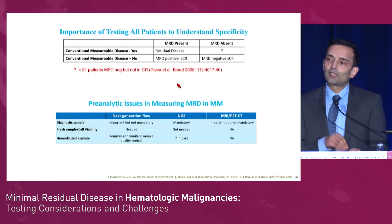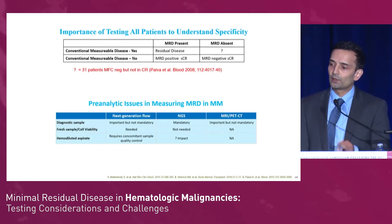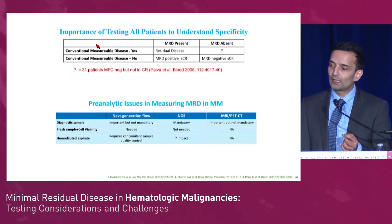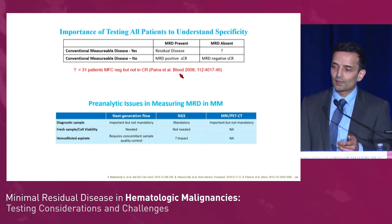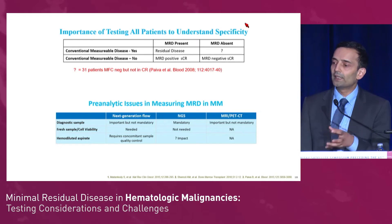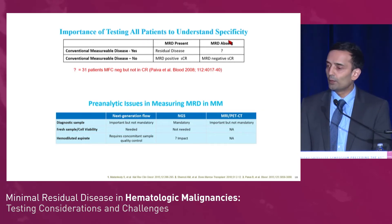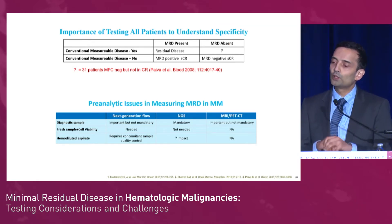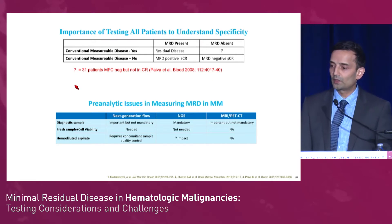One of my biggest pet peeves in our myeloma clinical trials is we don't test everybody. Here's a good example: if you looked at patients with conventional measurable disease, obviously most of them had MRD present. But there were 31 patients in this study who had measurable disease but were MRD negative by flow. In clinical trials in myeloma, if we only sample those suspected to be in CR, it inflates the specificity of the test. We really need to do a better job of testing more patients — though that comes with the price of an invasive procedure when you already have serologic measurements.